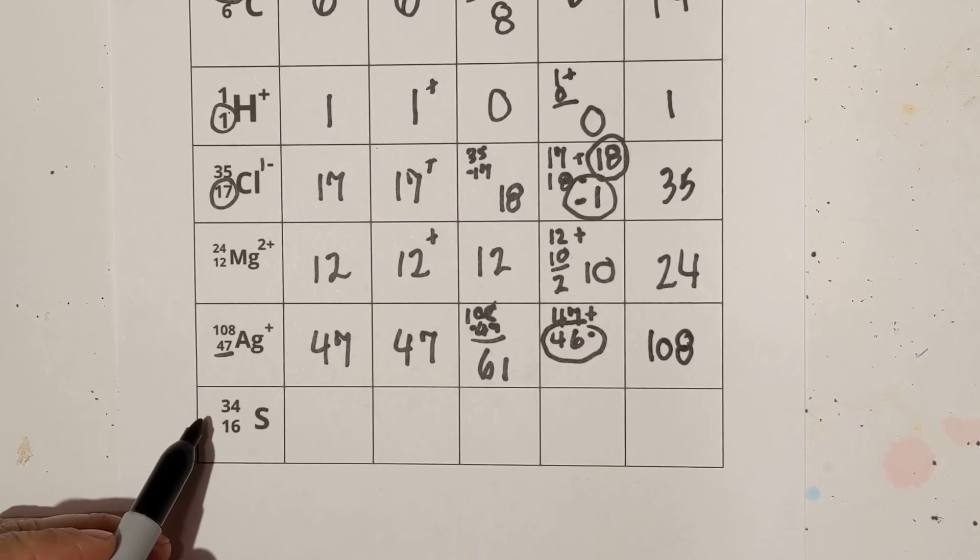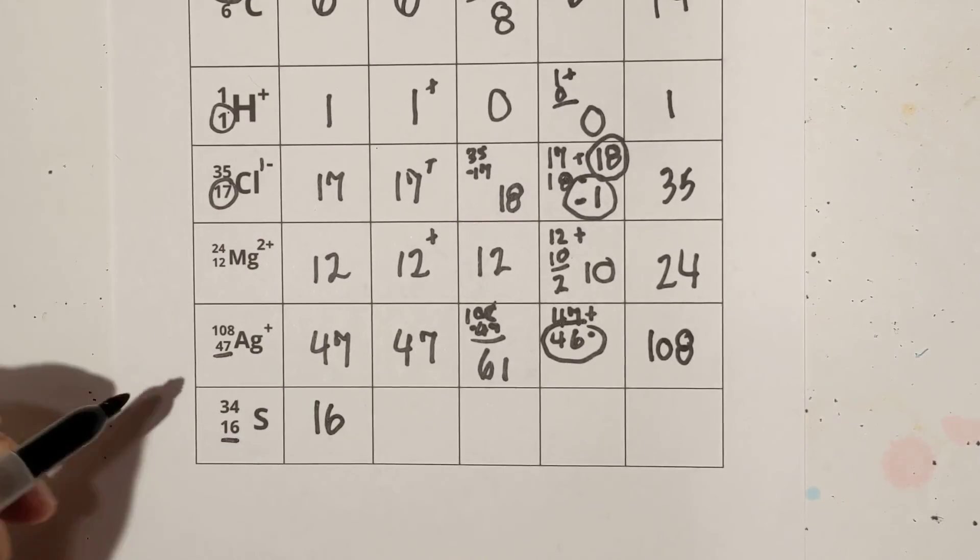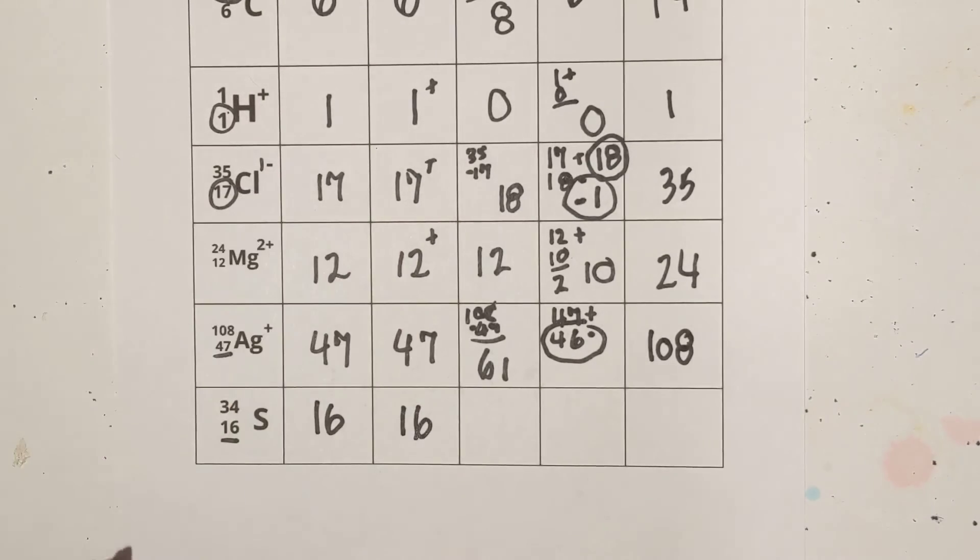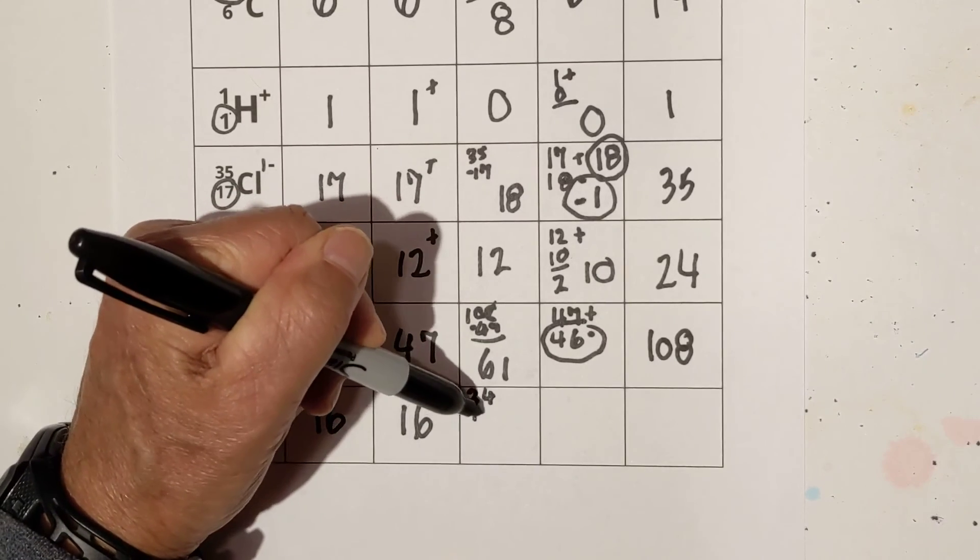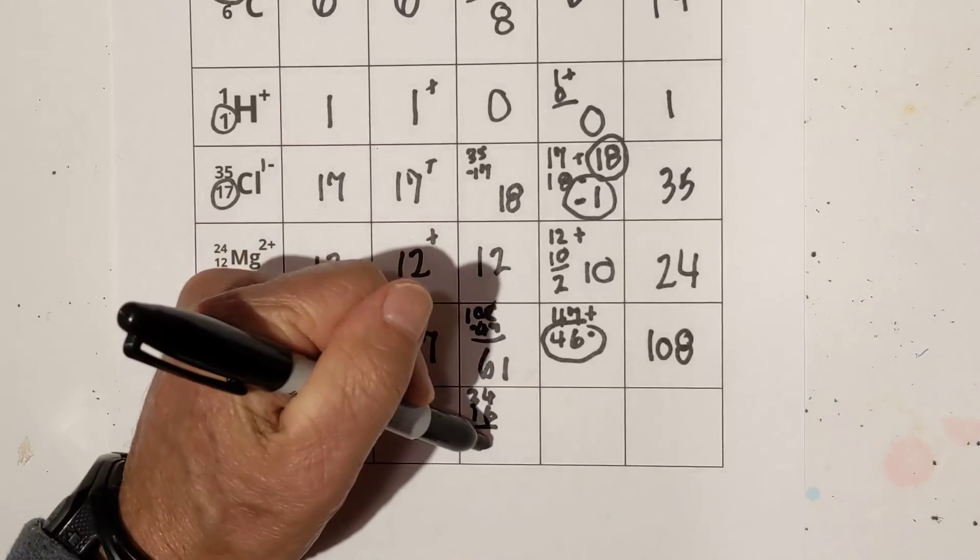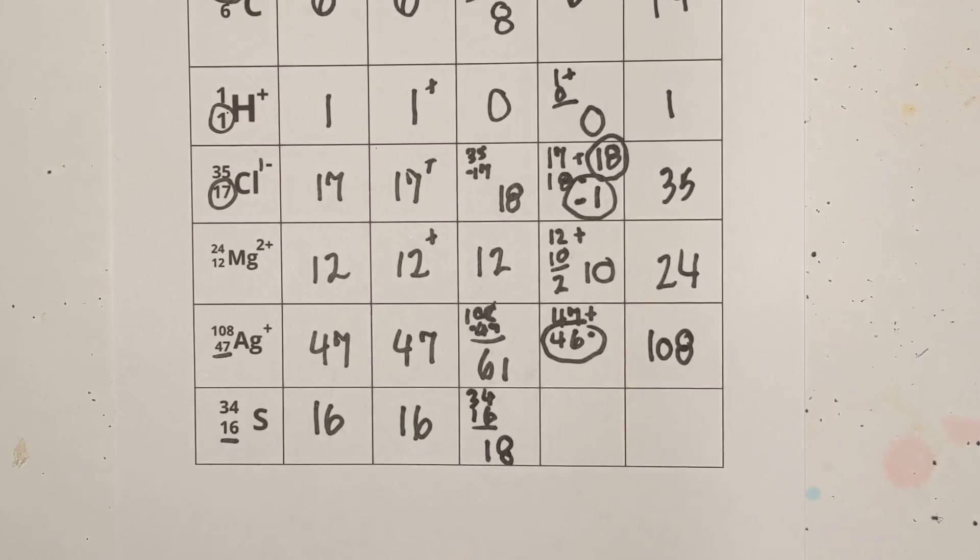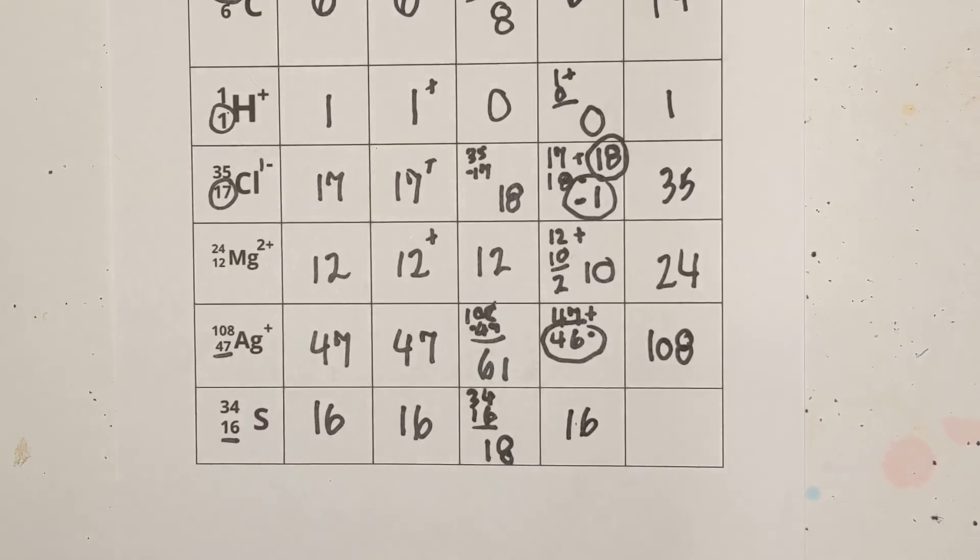Let's see, we have an isotope, we have the atomic number is 16, we have 16 protons, the number of neutrons, we'll take 34 minus 16, and the last time I checked, that is 18, 18 neutrons. It is neutral, so it's going to be the protons and the electrons are going to be equal, which is 16.